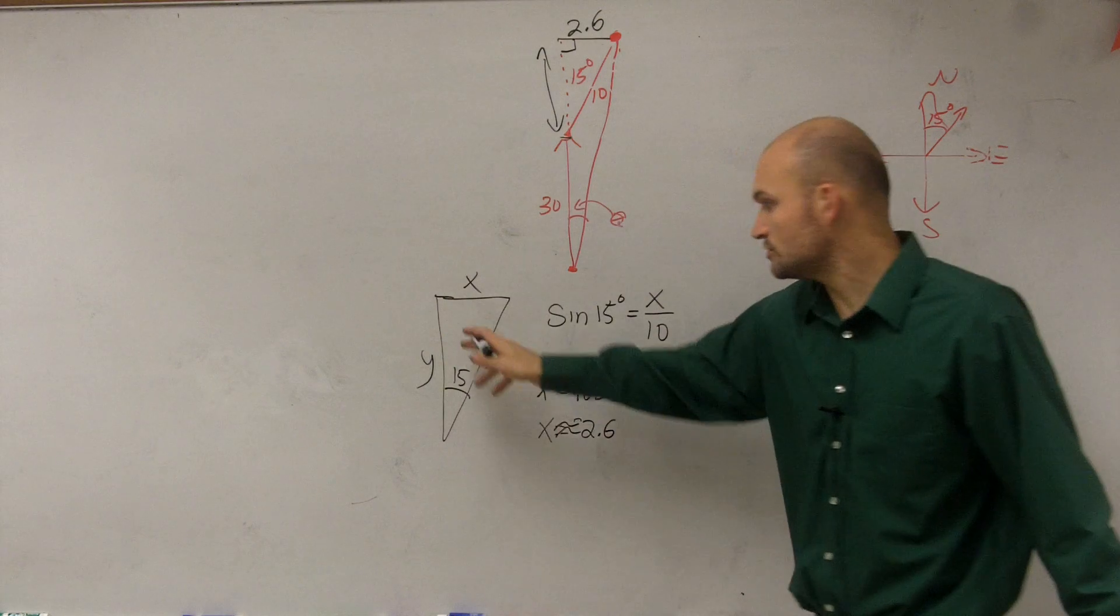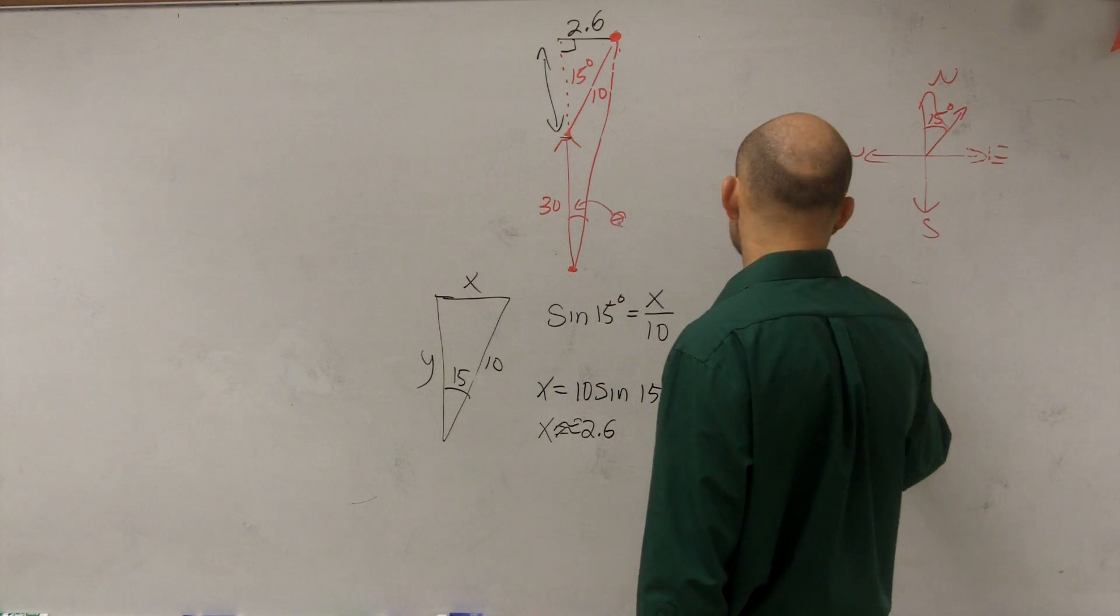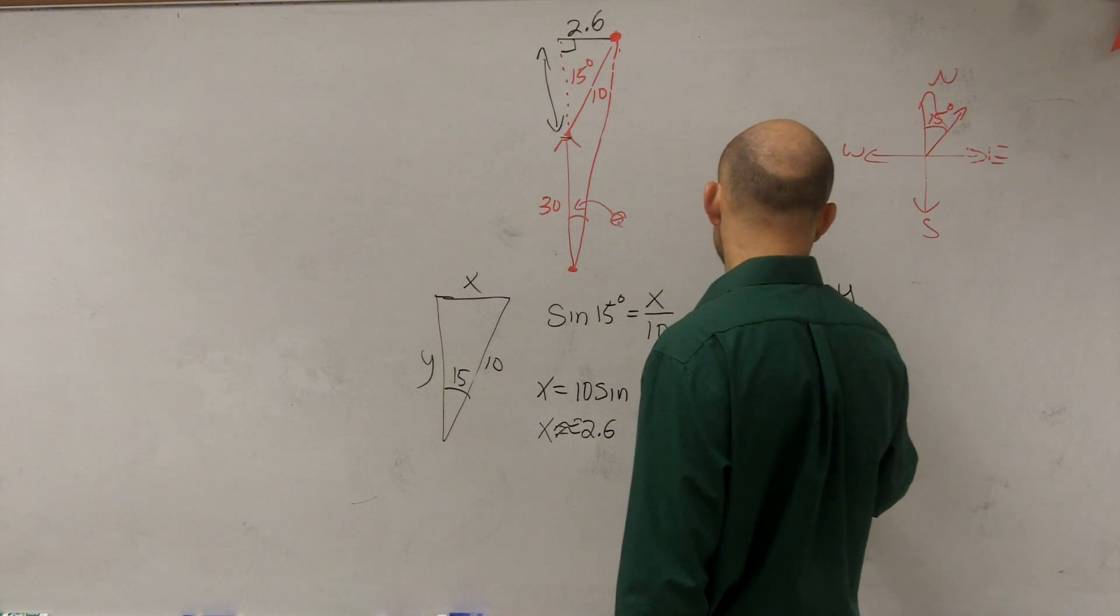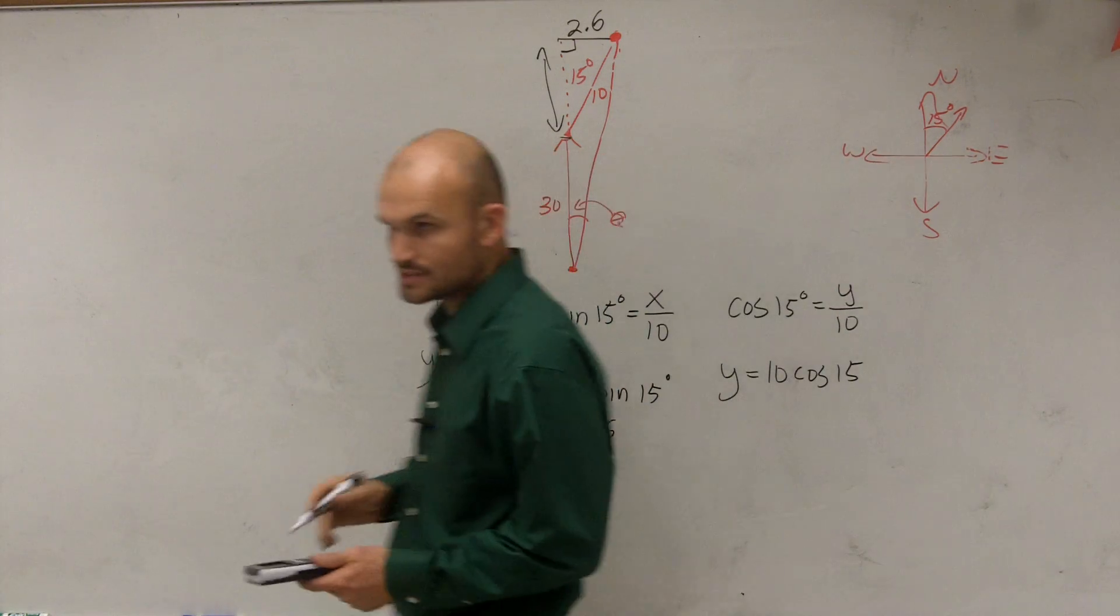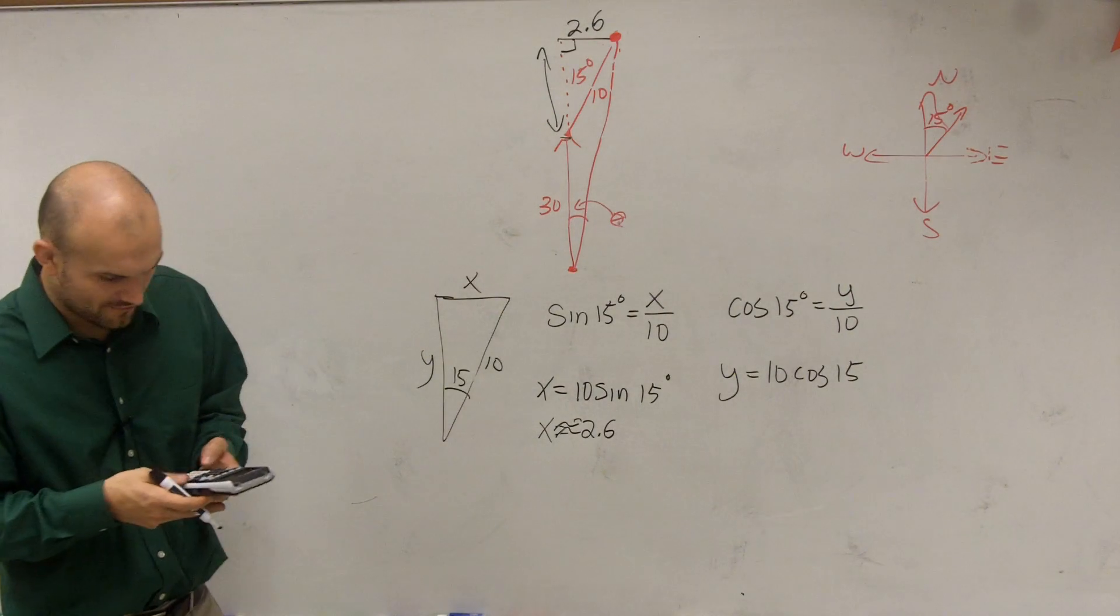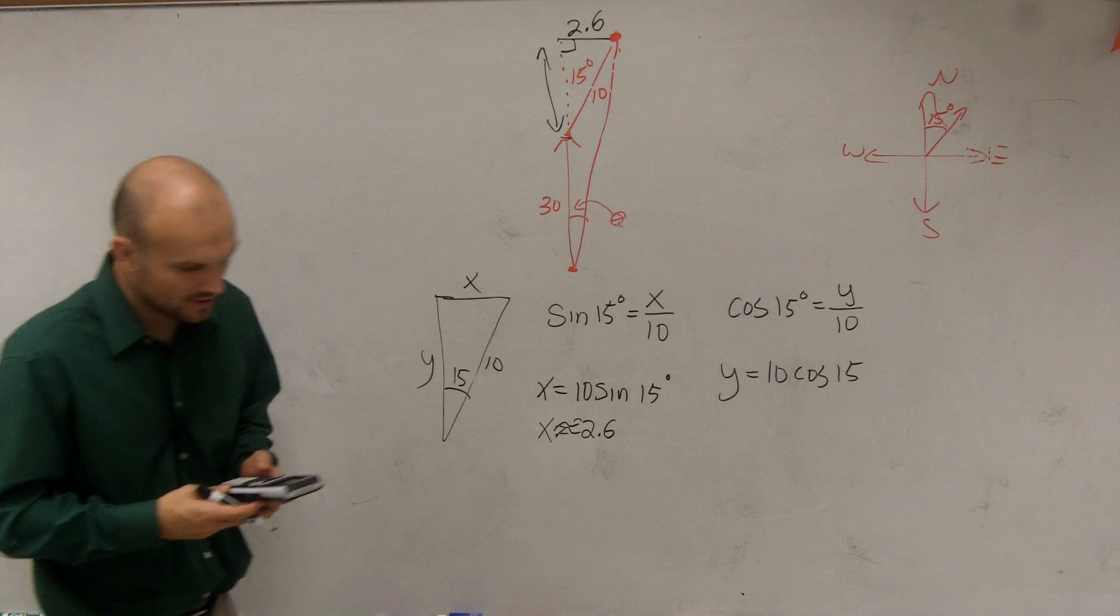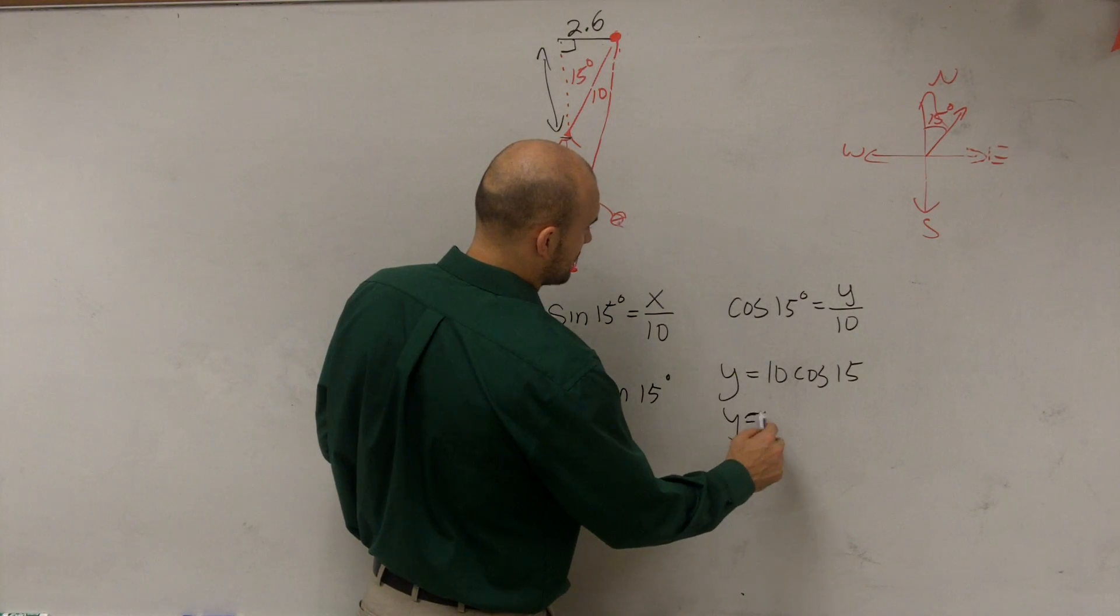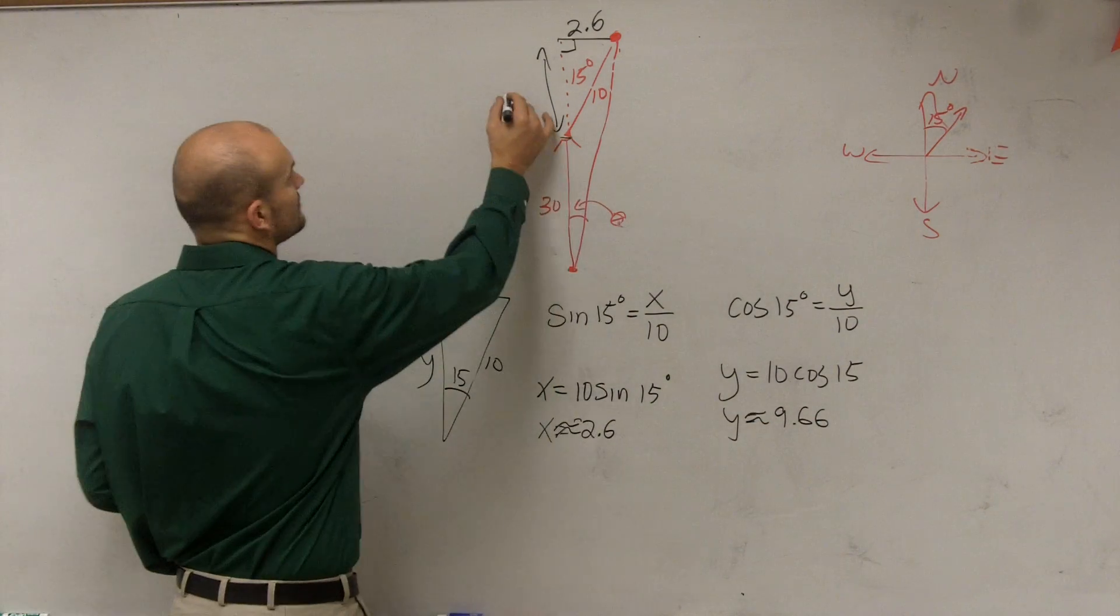So to use this triangle to figure out y, I could say the cosine of 15 degrees equals y over 10. Therefore, y equals 10 times cosine of 15 degrees. Does that make sense? Okay. So therefore, we do 10 times cosine of 15, which is going to be 9.66. So we could say y equals approximately 9.66 nautical miles.